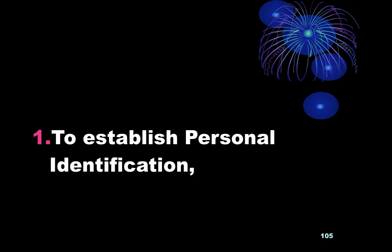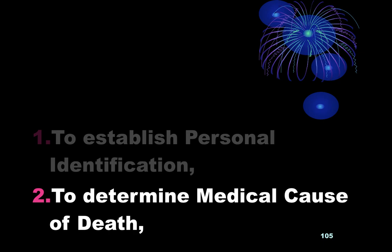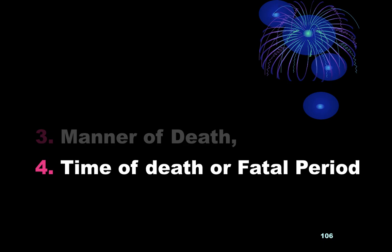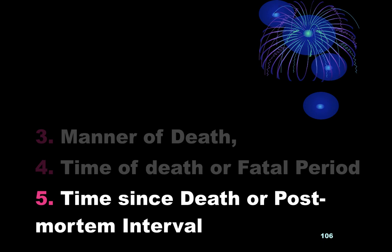The objectives of autopsy are: establishment of personal identification; determination of the medical cause of death; manner of death; time of death or fatal period — how much time elapsed between injury and death; and time since death, which is the post-mortem interval — how much time has elapsed between death and autopsy.